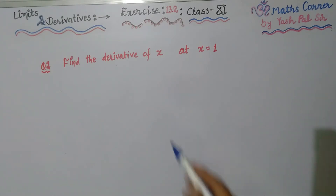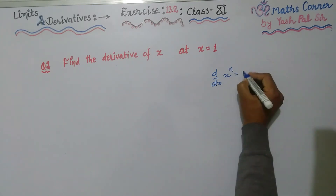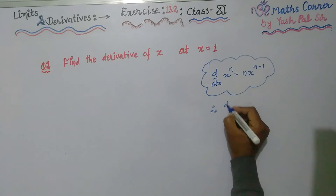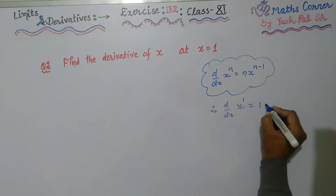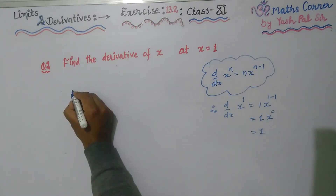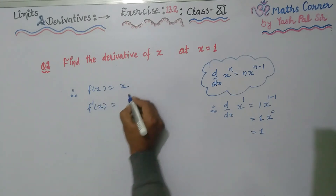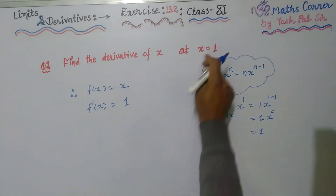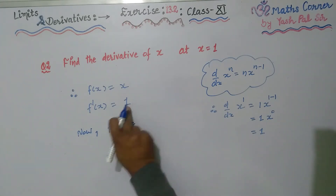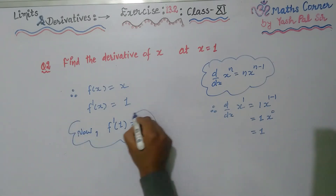Question number 2: find the derivative of x at x = 1. We know the derivative of x^n is n × x^(n−1), so the derivative of x^1 is 1 × x^(1−1) = 1 × x^0 = 1. So if f(x) = x, then f'(x) = 1. At x = 1, since there is no x in the result, the answer remains 1.